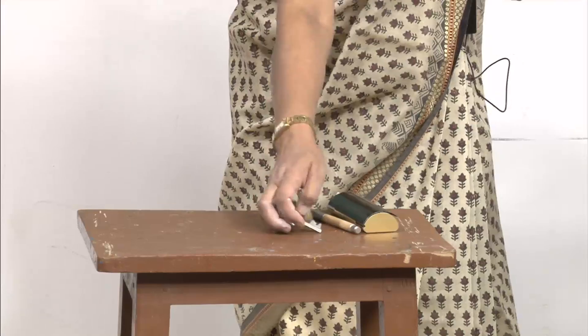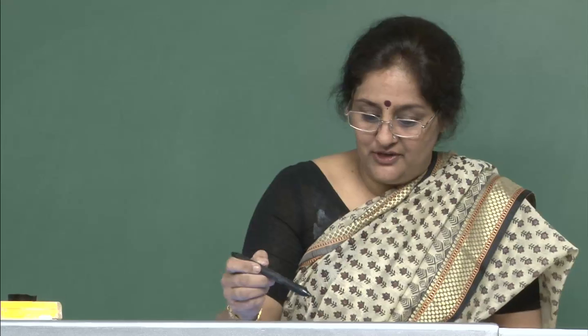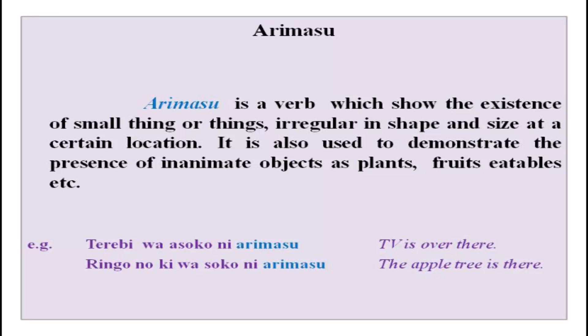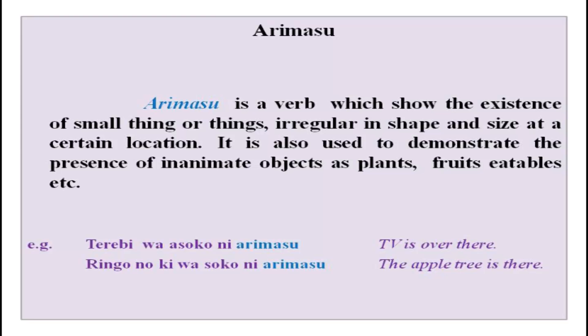Show things where they are, then ask your partner where they are located. Yubinkyoku wa doko desu ka — replace yubinkyoku with whatever is given and practice. Arimasu is a verb showing existence of small things, irregular-shaped objects at a certain place. Terebi wa asoko ni arimasu. Ringo no ki wa soko ni arimasu.